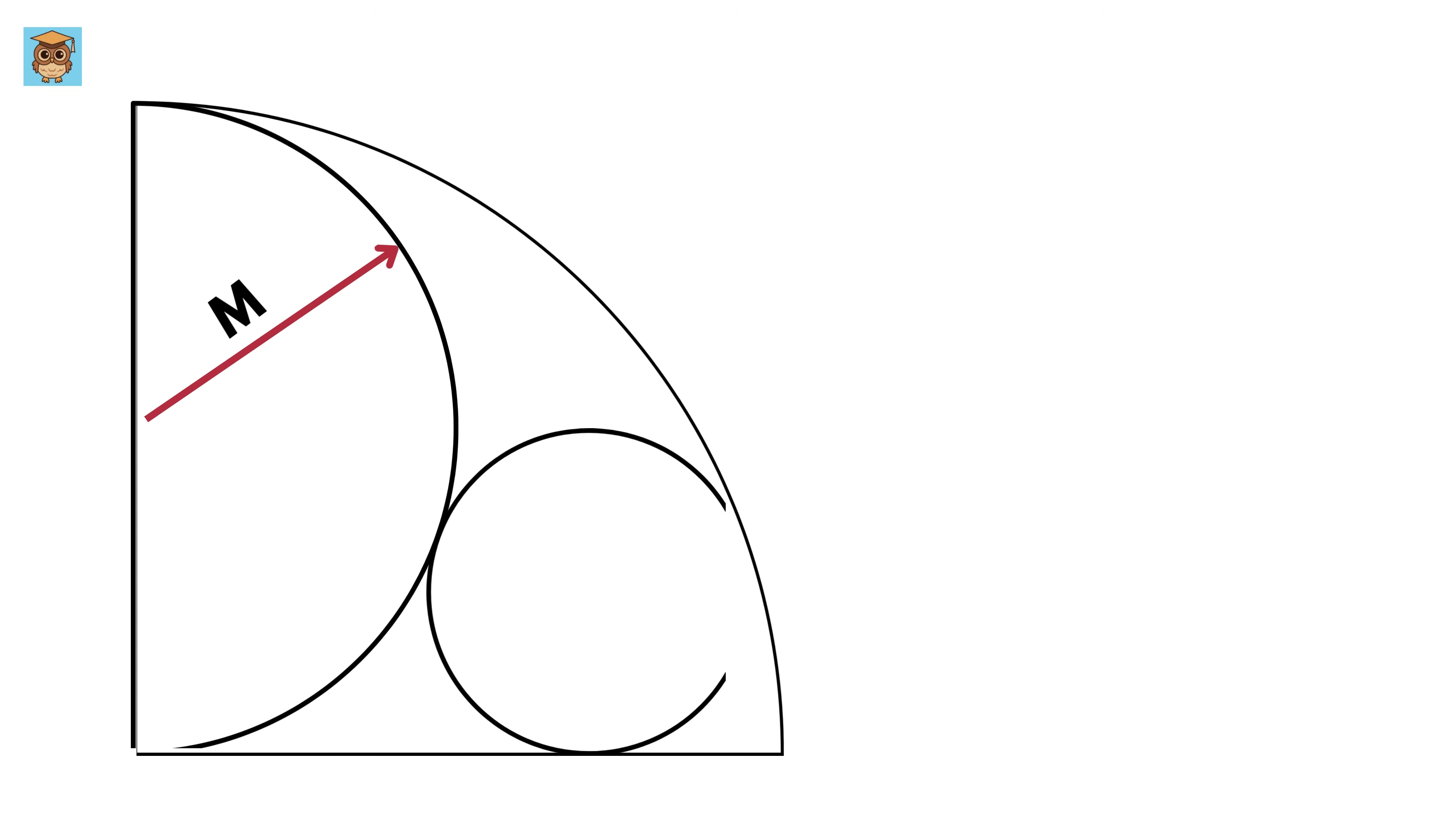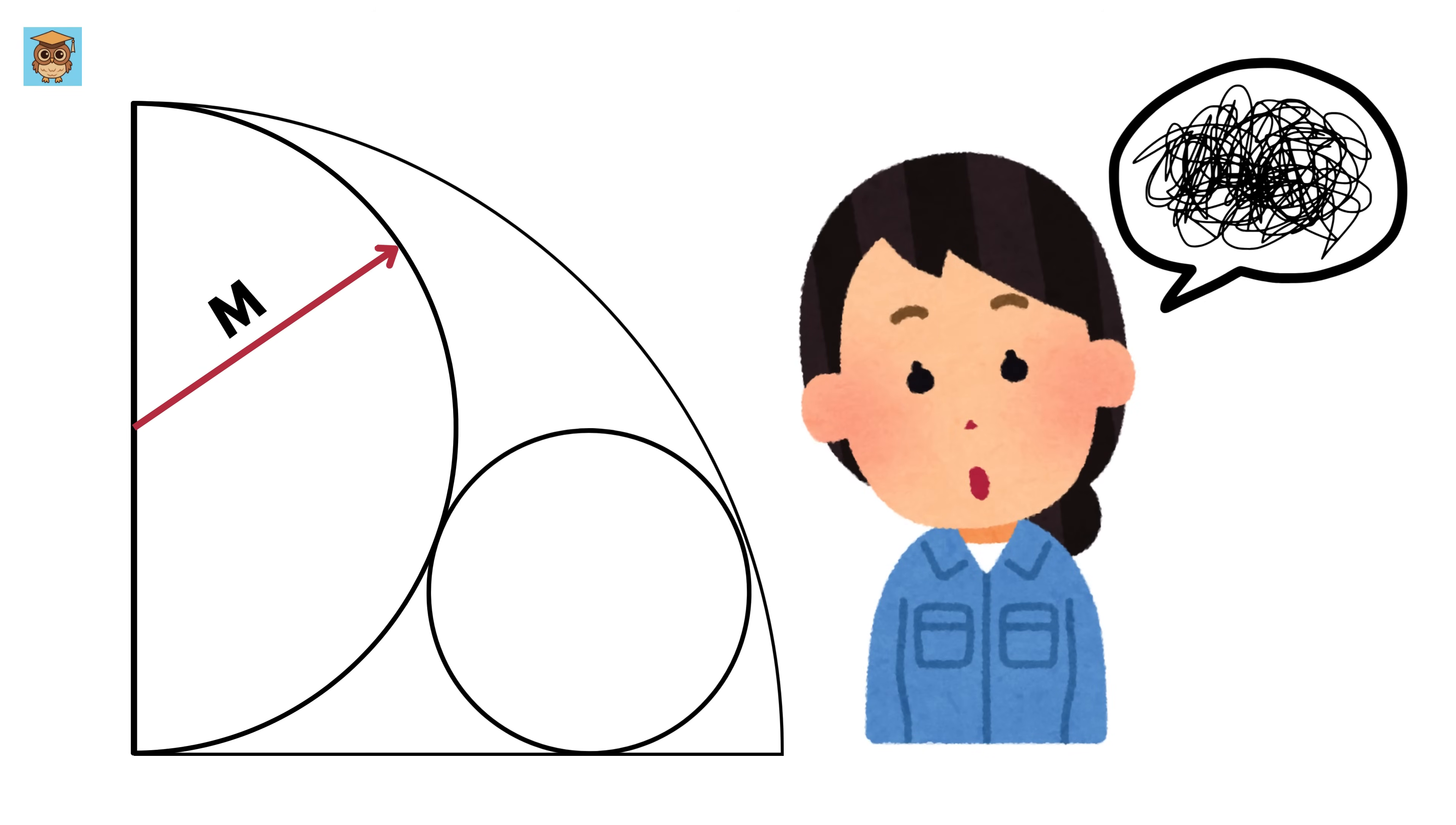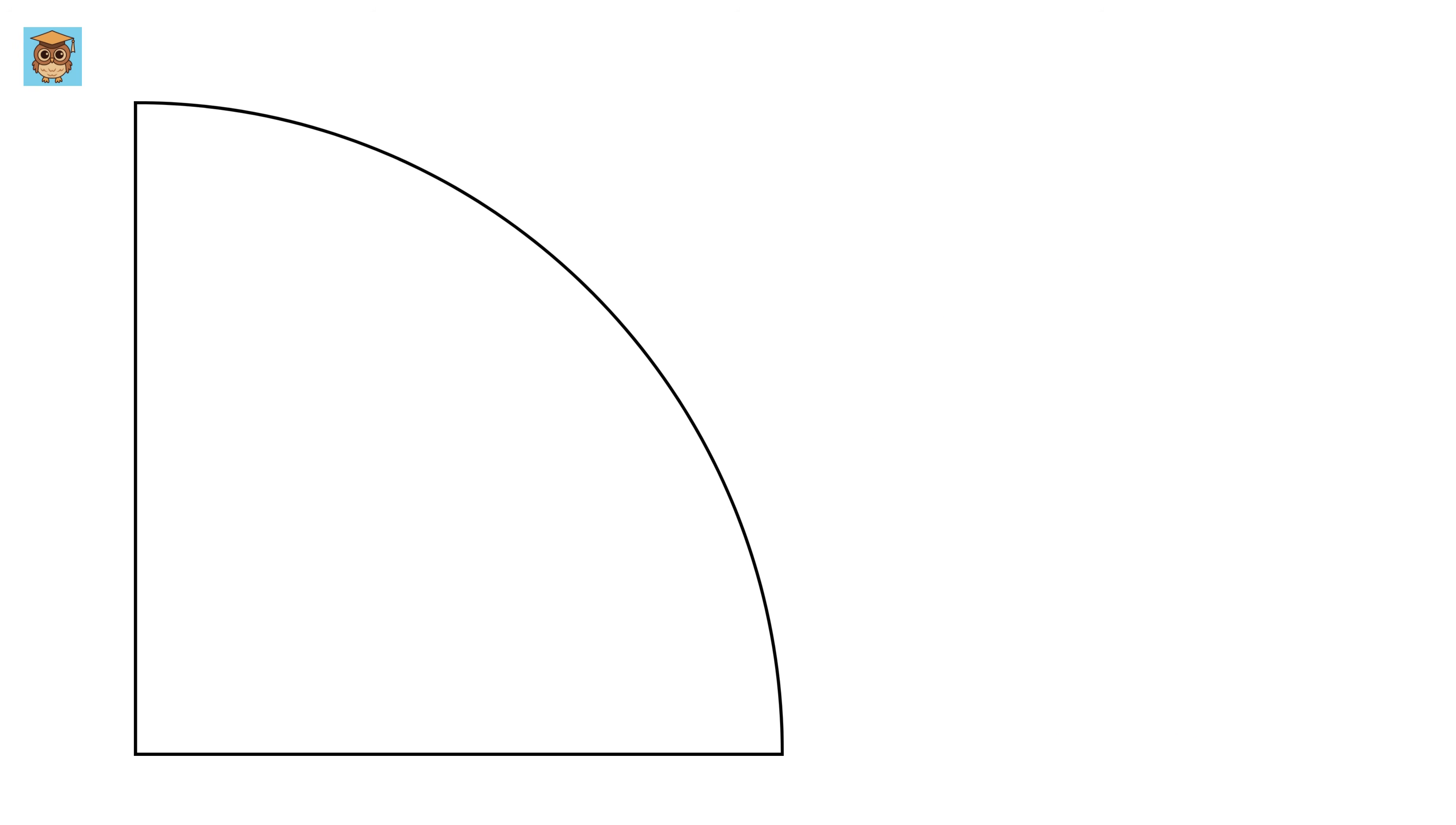This is an amazing geometry question which is going to take away all your brain cells from you and the final result will simply blow your mind. We have a quarter circle inside of which we have a semicircle and a circle like this.